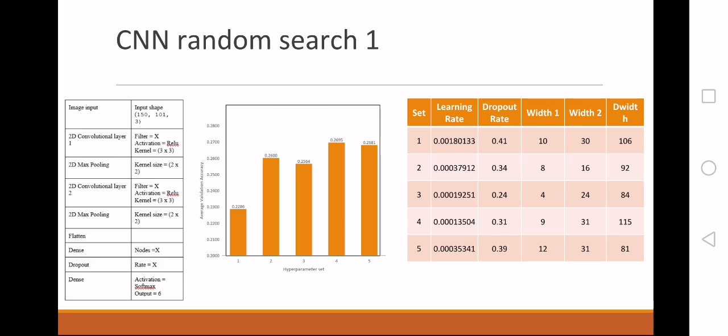You can see that this is the average validation accuracy, and it shows very bad results, worse than the transfer learning.